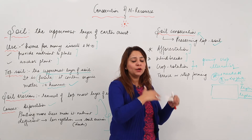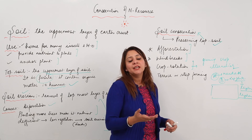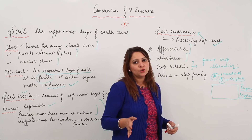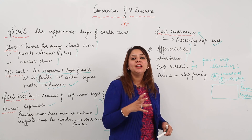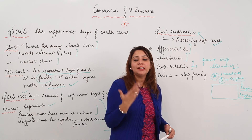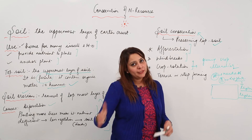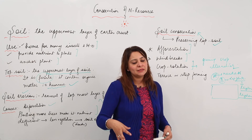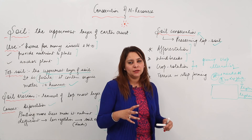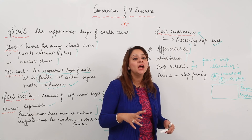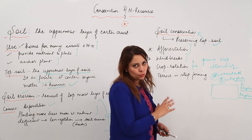For example, alternate with leguminous plants. Leguminous plants contain rhizobium bacteria, which are capable of converting atmospheric nitrogen into nitrogen compounds. So when crop A reduces the nitrogen content, planting crop B — a leguminous plant — will add nitrogen back to the soil, increasing its fertility. Fertile soil supports plant growth, plants hold the soil, and the soil becomes less prone to erosion.